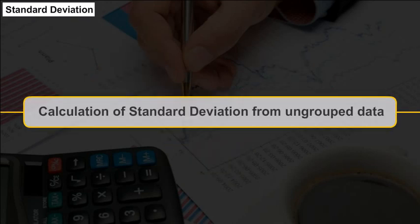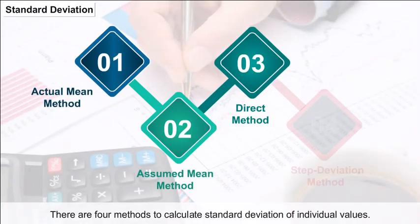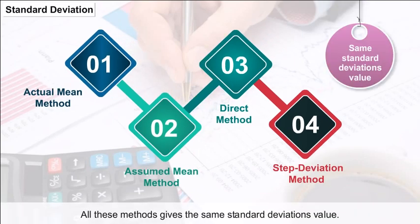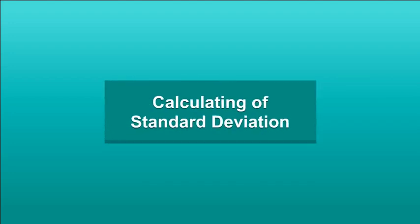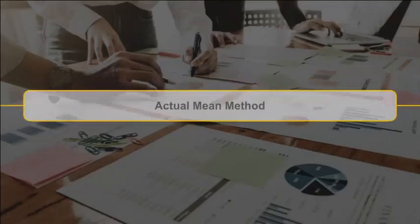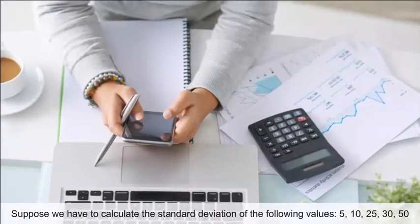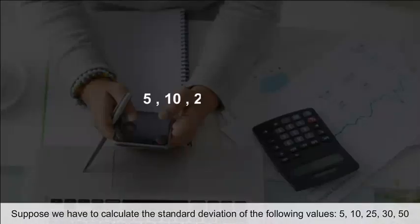Calculation of standard deviation from ungrouped data: there are four methods to calculate the standard deviation of individual values, and all these methods give the same standard deviation value. For example, using the actual mean method, suppose we need to calculate the standard deviation of the values 5, 10, 25, 30, and 50.